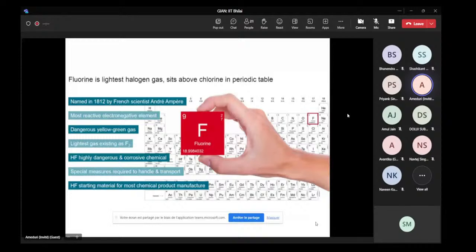And the free molecule F2 was discovered by Moissan in 1886. I will come back later. This is the most reactive electronegative element. It's very dangerous as a yellow-greenish gas. It's the lightest gas existing as fluorine, F2. HF also is highly dangerous and corrosive chemical. If you burn HF on your skin, you might have a reaction with the calcium of the bone. And in this case, you can have a condition which can be fatal in certain circumstances. The antidote for HF is sodium gluconate.